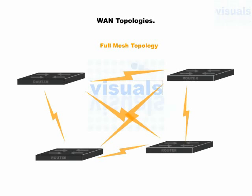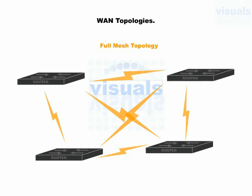Here is full mesh topology. Under full mesh topology, each WAN device has a direct connectivity with every other WAN device belonging to different areas. This connectivity is established using WAN connection types. Each device has a separate connection with all the other devices. Implementing full mesh topology is an expensive way of implementing WAN, but it is helpful in situations where a connection fails, because under this topology we have multiple connections.